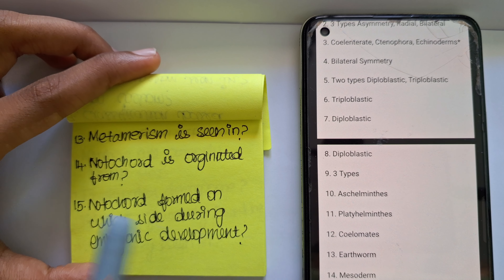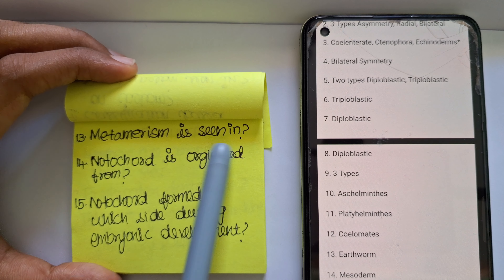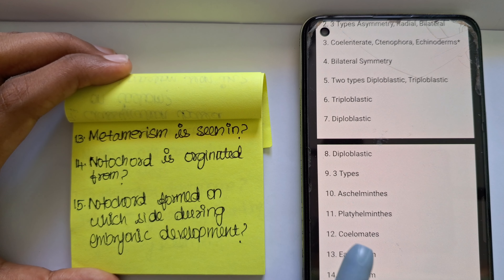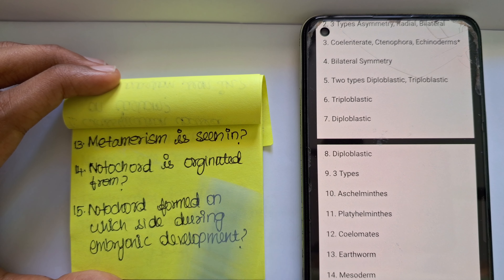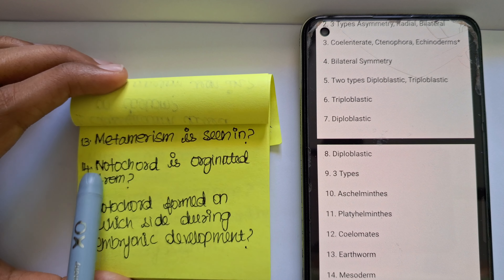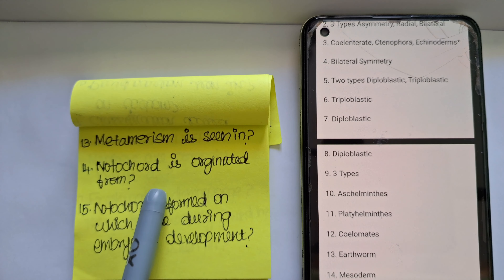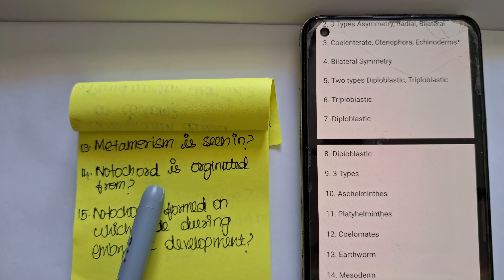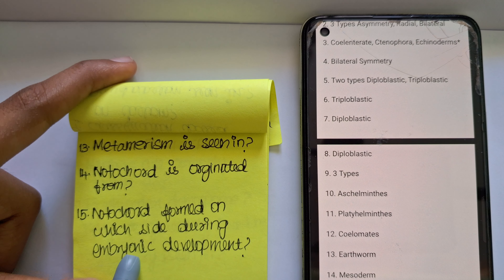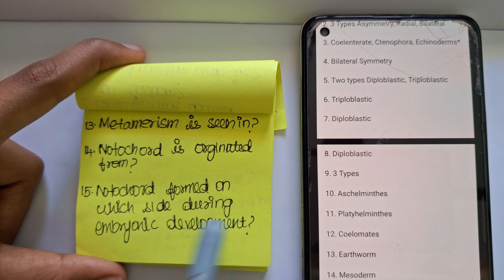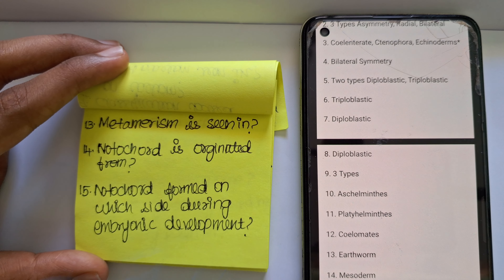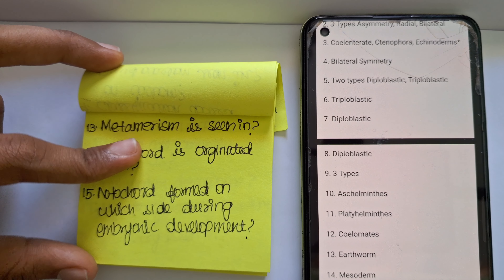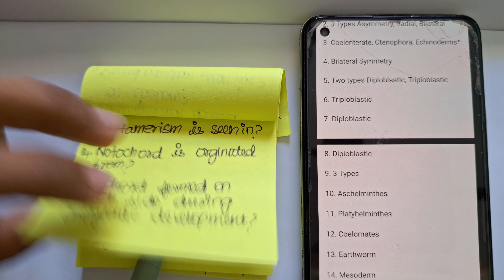The next question: metamerism is seen in which organism? It is obviously your earthworm. Metamerism is nothing but the serial repetition of segments — seen in your earthworm. The next question: notochord is originated from which layer? Your notochord is originated from mesoderm. Notochord forms on which side during embryonic development — dorsal or ventral? The answer is dorsal. With this we wrap up the basics of classification.